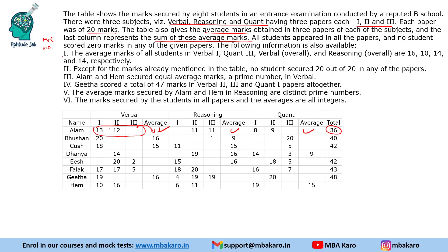The information presented to us is the average marks - average, fine - except for the marks already mentioned in the table. For example, no student scored 20 out of 20 in any of the papers. So all these values are positive numbers, meaning they range from 1 to 19. The marks secured by students in all papers and averages are all integers, so the averages are also all integer values.